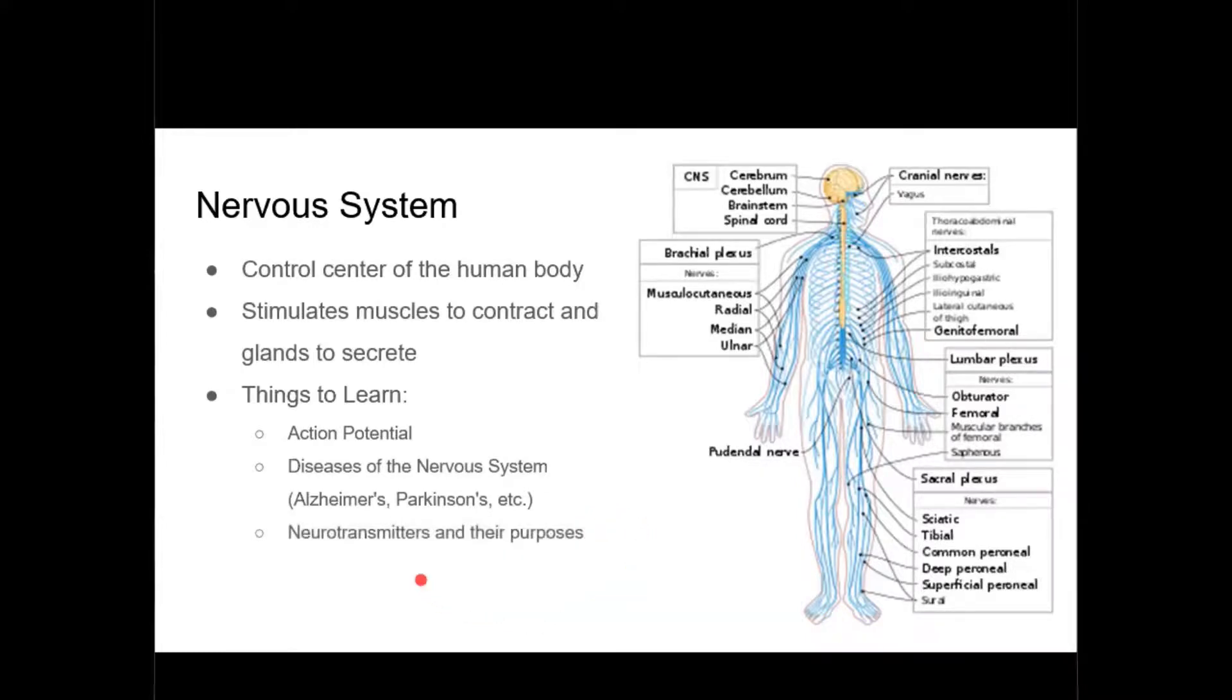You want to know what neurotransmitters are, the different types, and their specific purposes, like dopamine. You also want to know the anatomy of a nervous cell, being able to tell the axon from the dendrites.